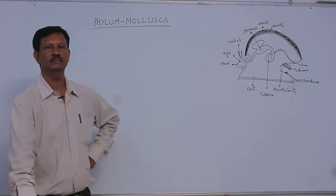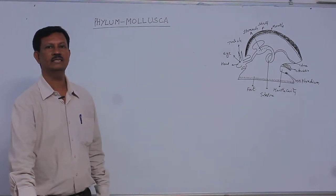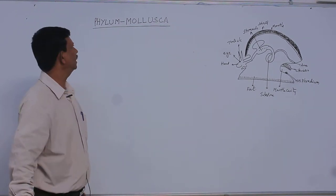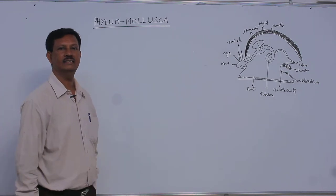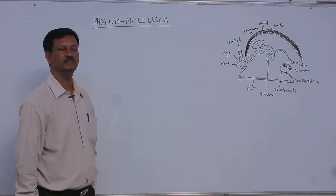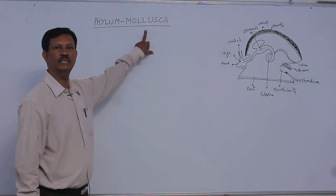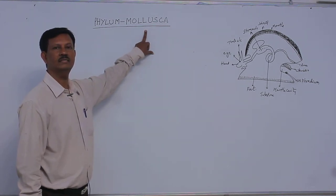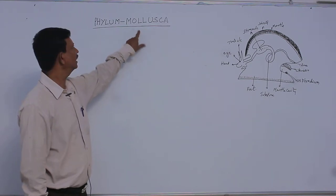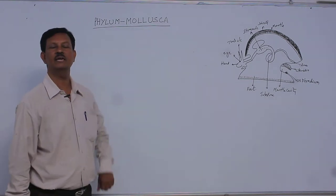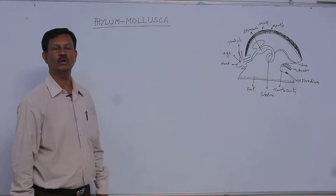Good morning. Today's lesson is Phylum Mollusca: General Characters and Classification. Mollusca means soft-bodied animals. These animals possess a soft body, hence the phylum name is derived as Mollusca.